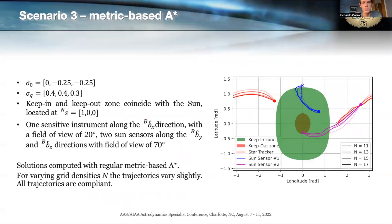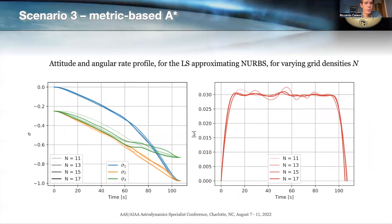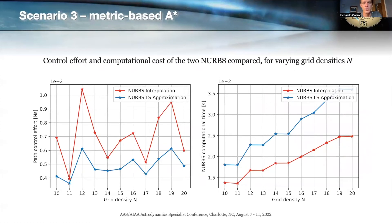Scenario three is the most interesting because there is still a sensitive payload along the X direction and a keep-out zone, but also two sun sensors that need to stay within the sun direction, giving rise to a keep-in constraint. These are the trajectories computed for varying grid sizes. There is a somewhat more complex comparison between the two curves, but again the least-square approximating NURBS is more cost efficient in control effort and less computationally efficient.